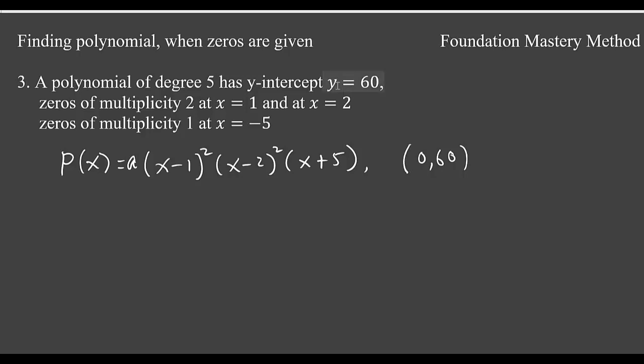So we see now the y-intercept is 60, therefore the polynomial passes through the point (0, 60). So let us plug this point. So y is 60, and then my x will be 0,